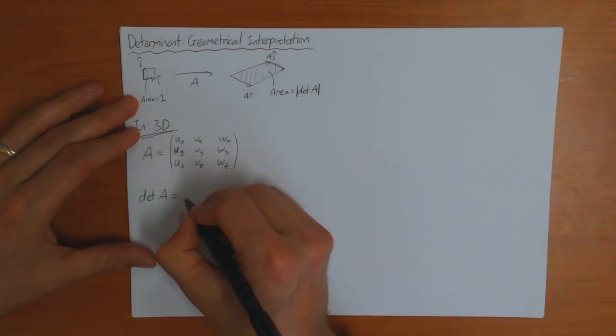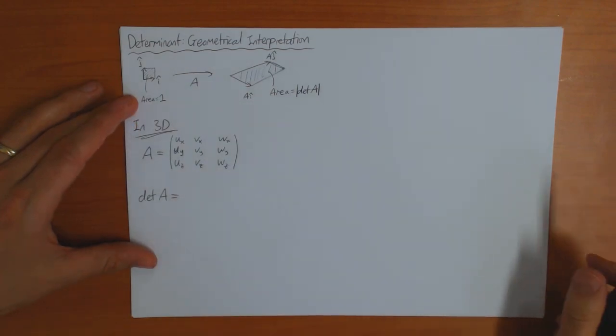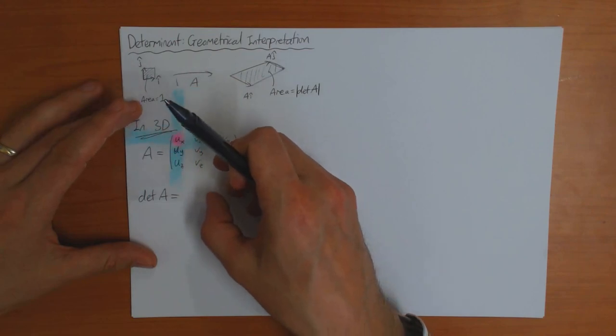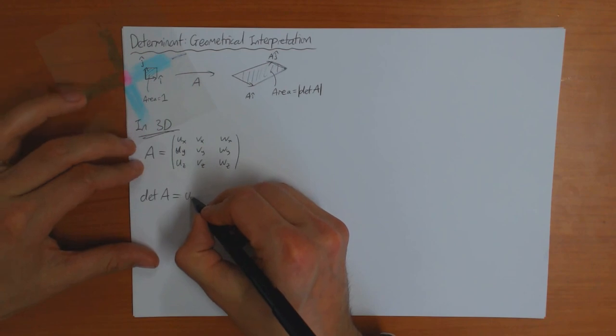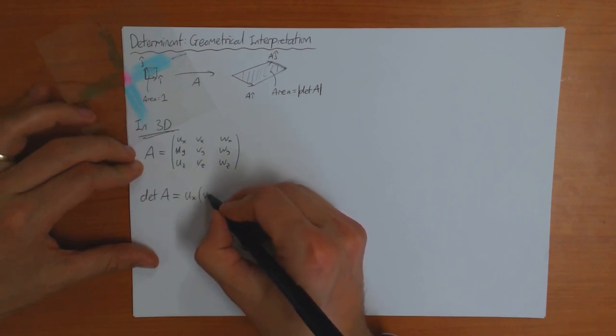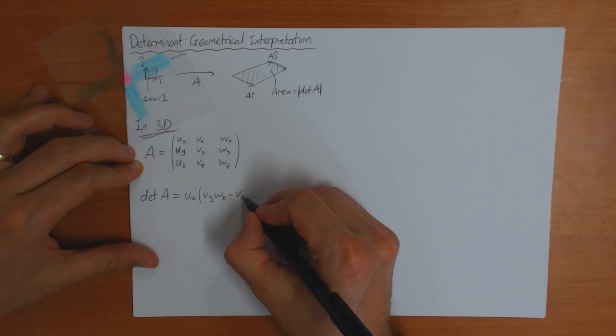Now if I compute the determinant of this matrix, then using the rule I showed you before, it's this one times the determinant here. So that gives you UX times VY, WZ minus VZWY.